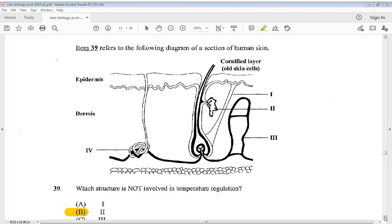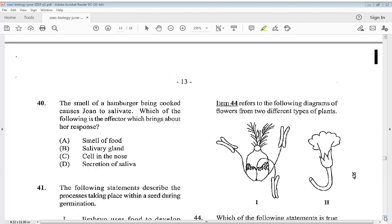Let's go on to number 40. It says the smell of a hamburger being cooked causes Joan to salivate. Which of the following is the effector which brings about her response? A smell of food, B salivary gland, C cell in the nose, D secretion of saliva. So the answer is B, salivary gland.